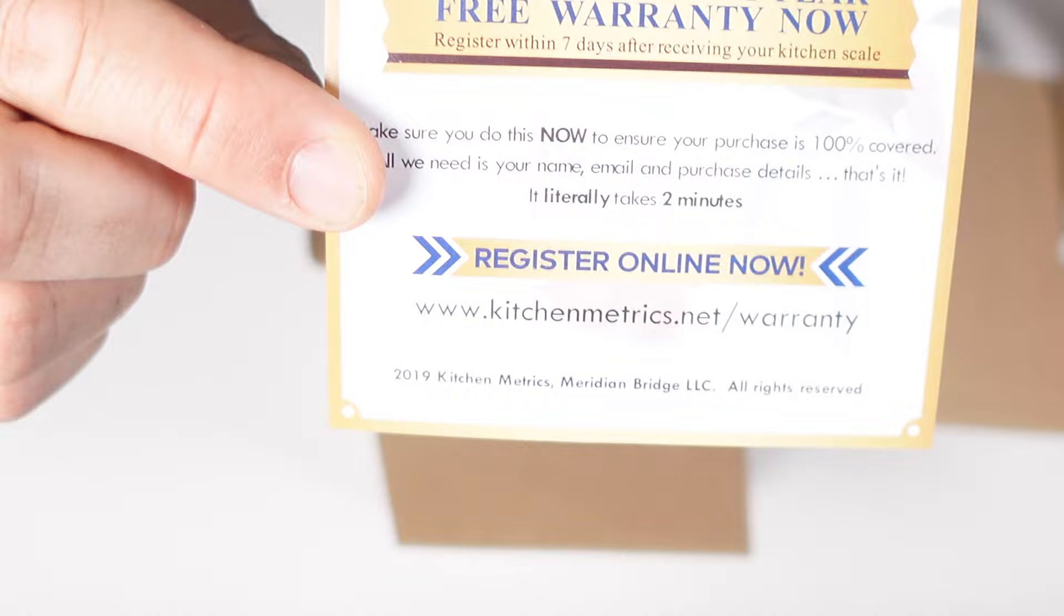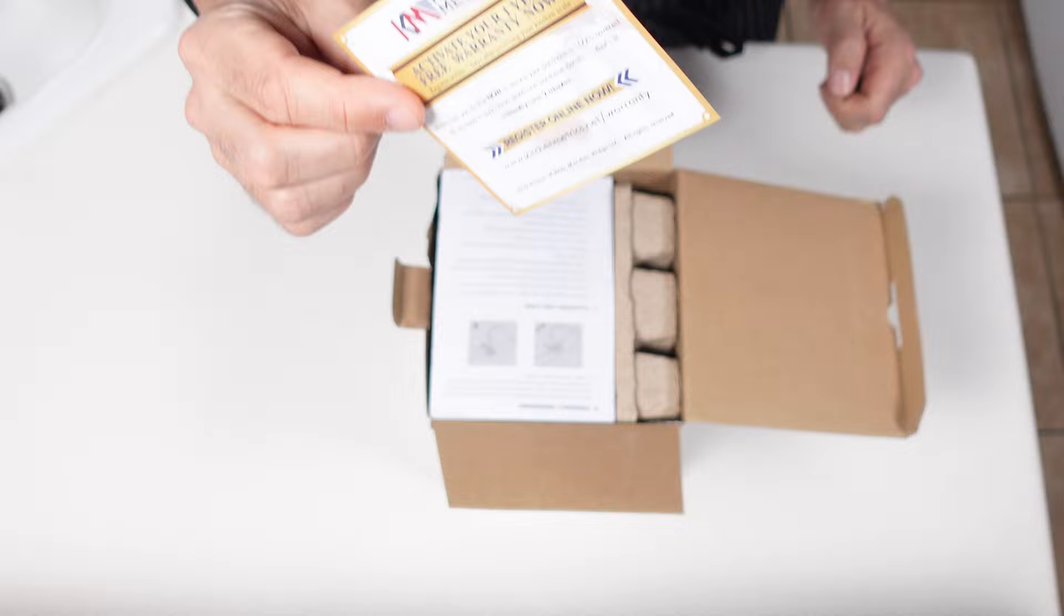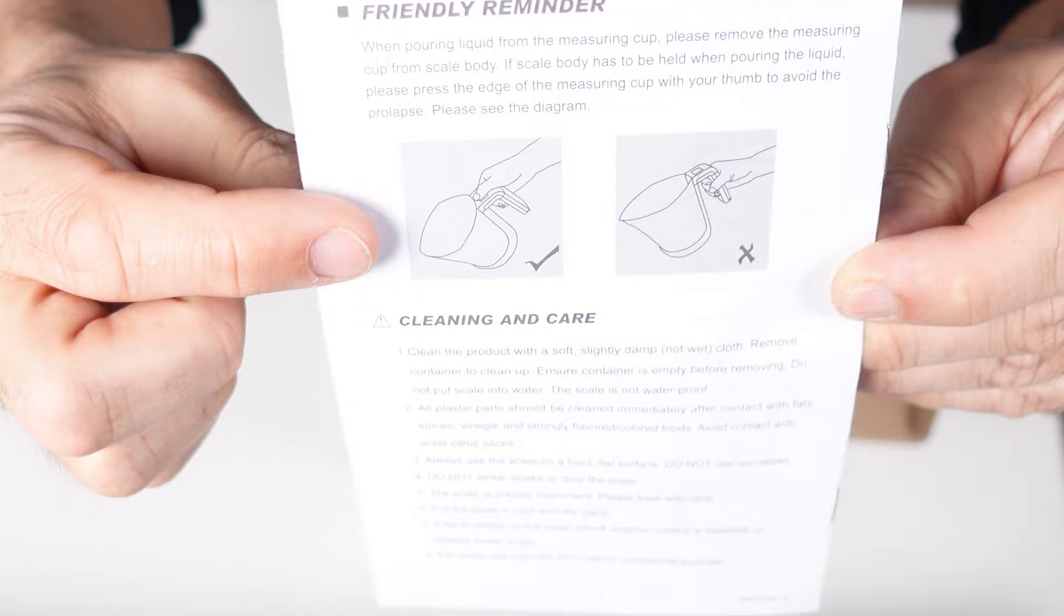Hey activate your one-year free warranty as opposed to a one-year paid warranty. There's a friendly reminder that when you pour you better have your thumb on top of the measuring cup or it might fall off. This is getting better and better. The rest of this book just tells you how to use all the buttons and everything else. Standard stuff.